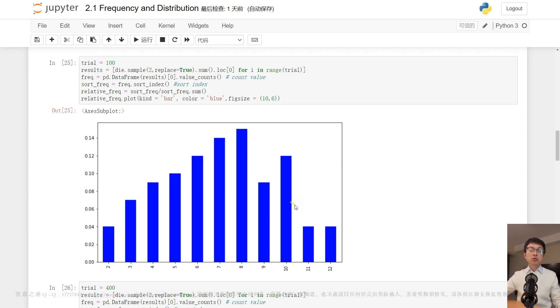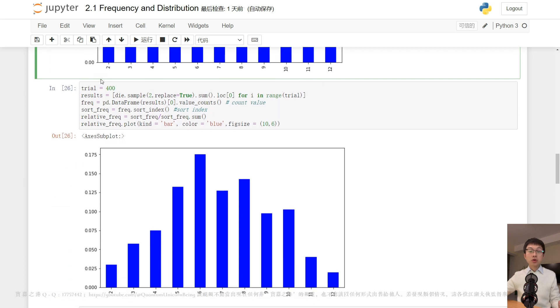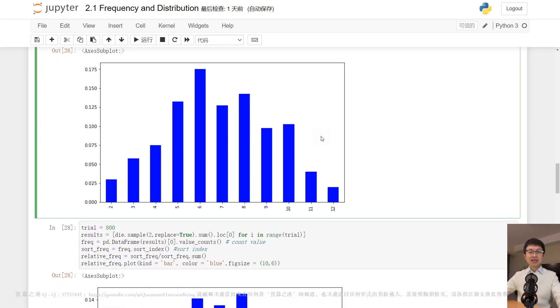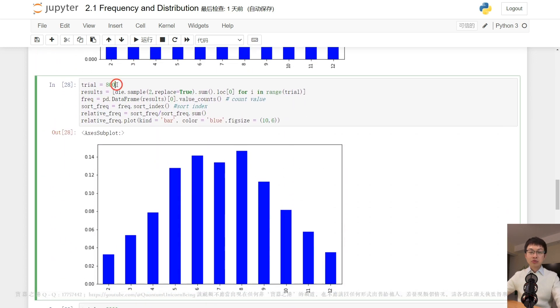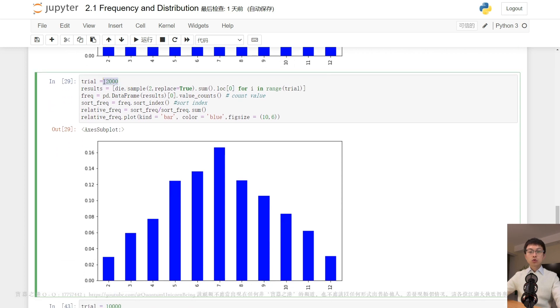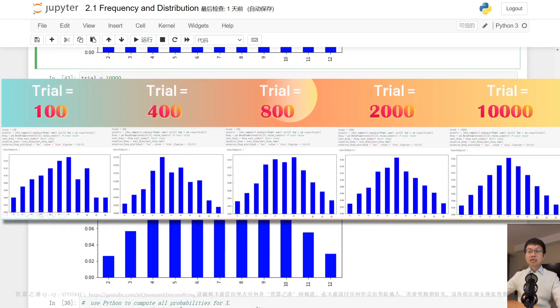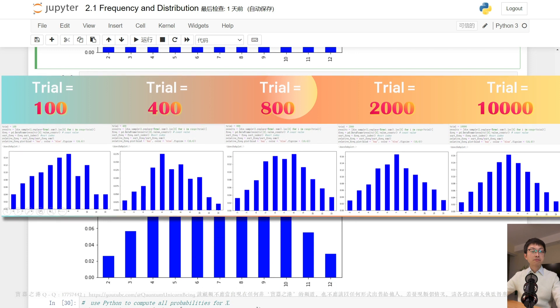Then, I'm going to do an experiment here. I will increase the number of trials gradually. Say, I will try 400 trials, and 800 trials, 2,000 trials, 3,000 trials, and 10,000 trials respectively.